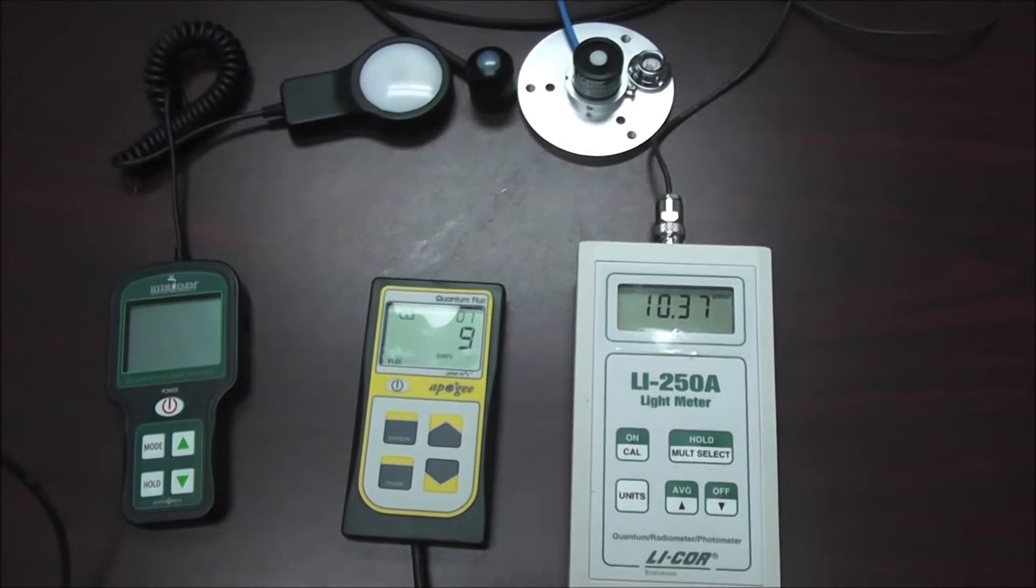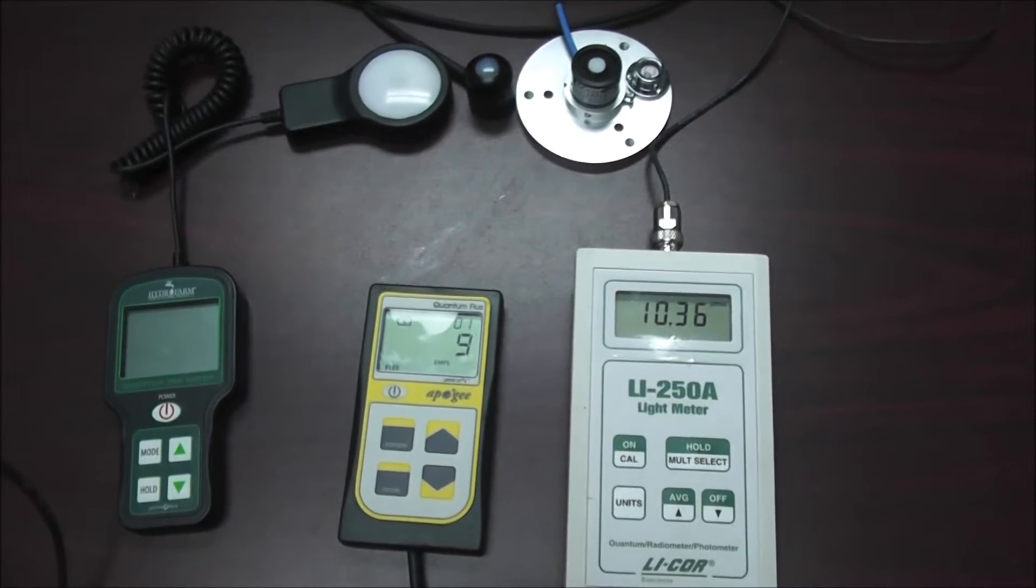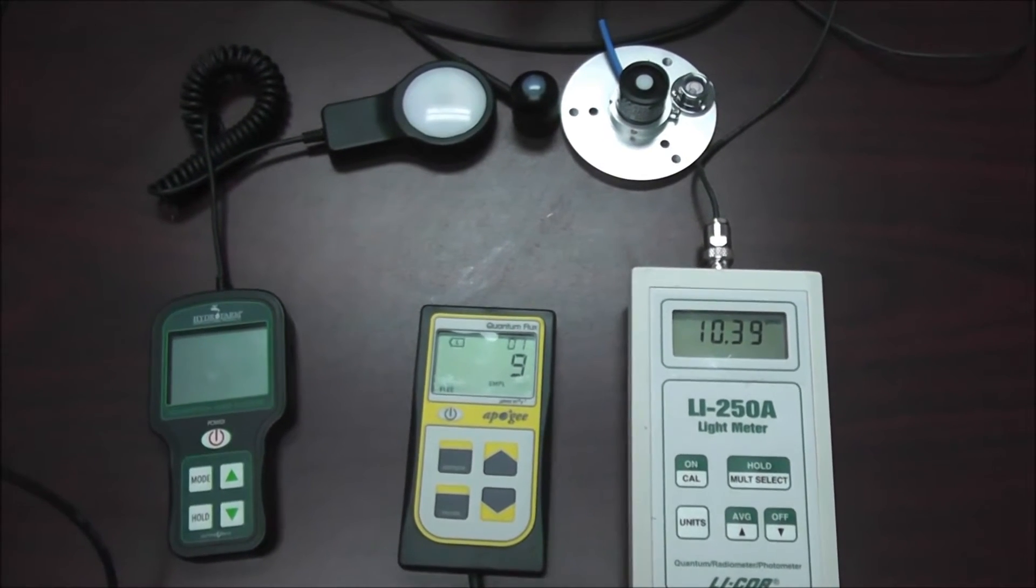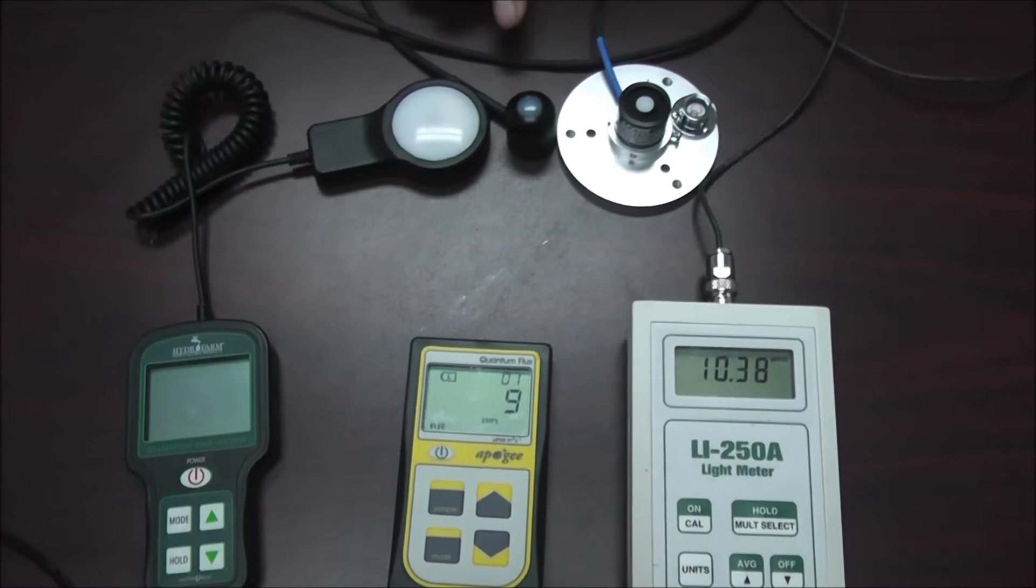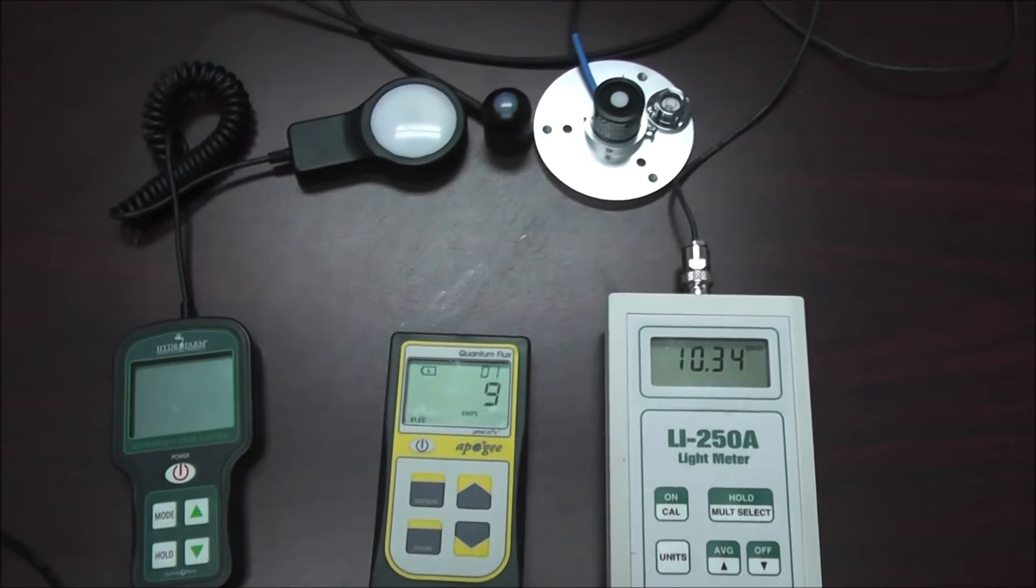Since the LiCOR meter was able to measure the light both from horizontal and vertical direction, they get 10.4. The Apogee meter was only able to measure the light from vertical direction, they got 9.